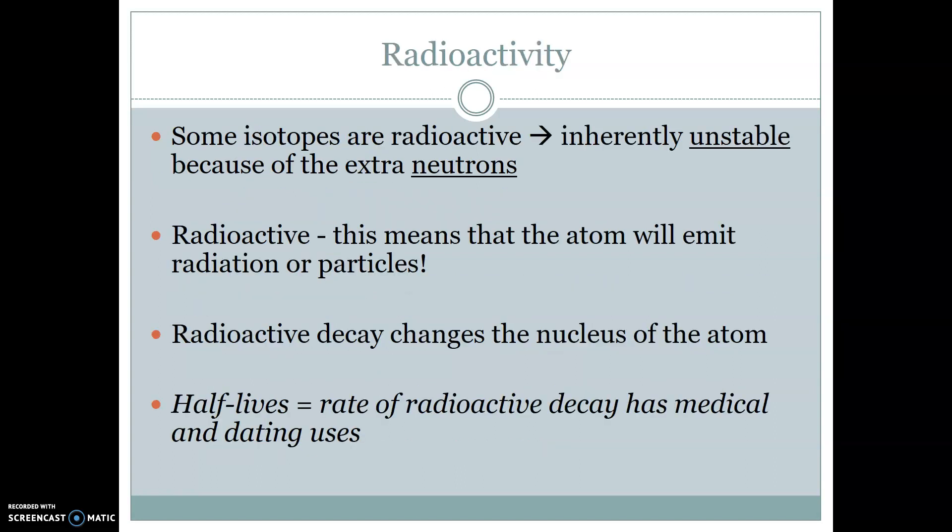So the reason why isotopes are radioactive is because with the extra neutron, it makes the nucleus unstable. And so it makes the nucleus want to kind of break apart. So what happens is that the atom will emit radiation or particles, and the nucleus of the atom can then change. The rate at which this happens is what we call a half-life.